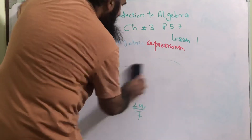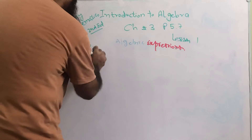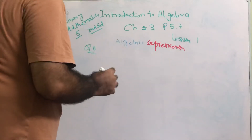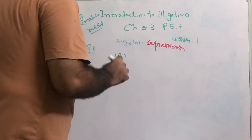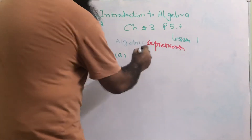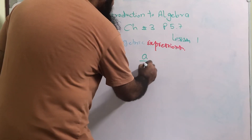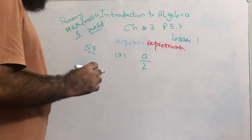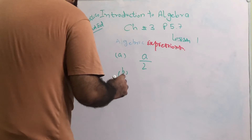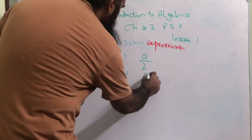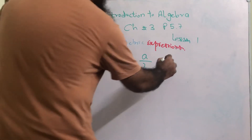Now we'll move to question number 11 on the same page. Part a is: divide a by 2. The algebraic expression is a over 2. Part b is: divide 5b by 7. The algebraic expression is 5b over 7.